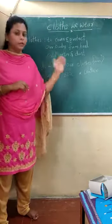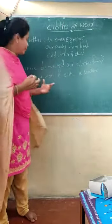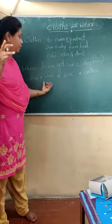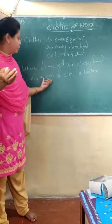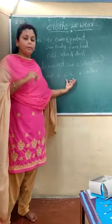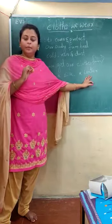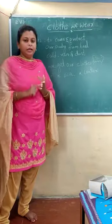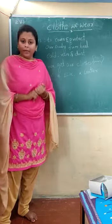In this video, children, we have discussed what clothes are, what they are used for, and where we get them. We came to know that there are sources of clothes: cotton, wool, silk, and leather. Cotton comes from plants, wool from animals, silk from the silkworm, and leather from the skin of dead animals like tiger, cheetah, lion, elephant, snake, frog, crocodile, turtle, and buffalo.